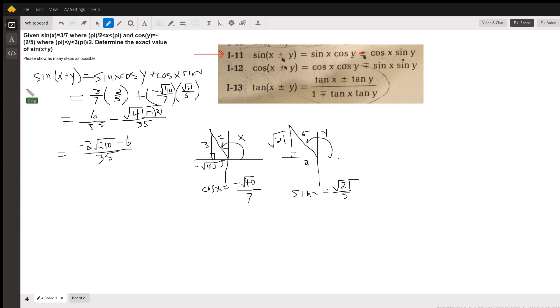So I've rewritten that right here and then I started substituting. The sine of x we know is three sevenths and the cosine of y is negative two fifths.